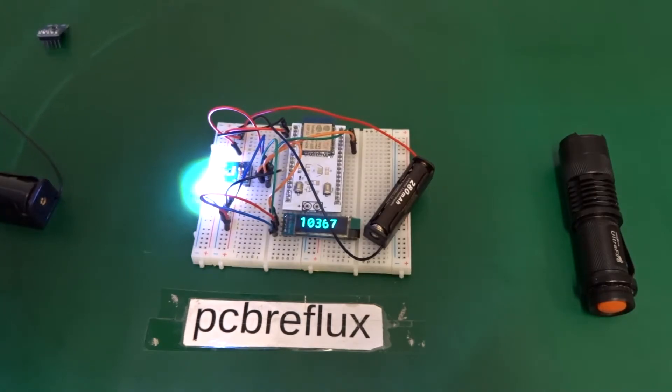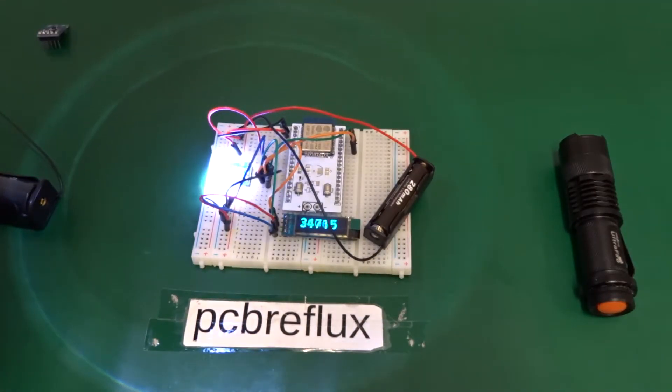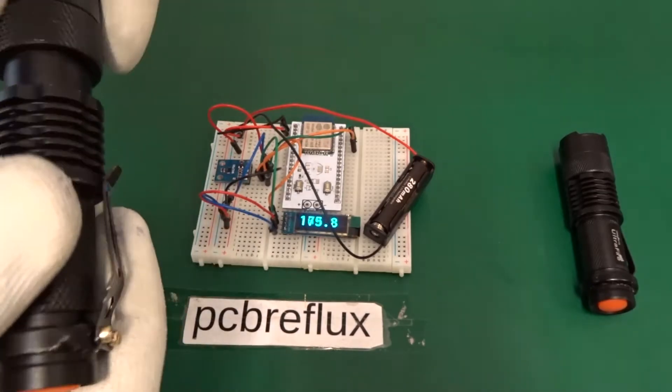This torch has three different modes: a very bright mode, a dim mode, and also a flashing mode. Now let's change the torch.